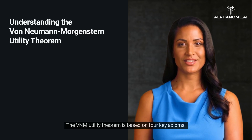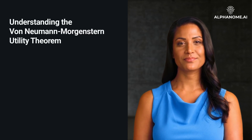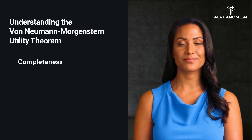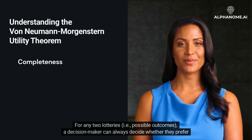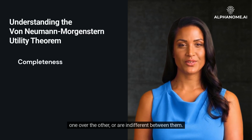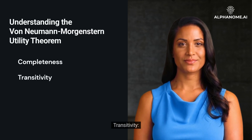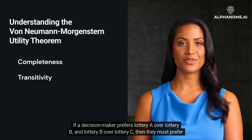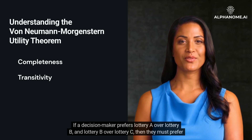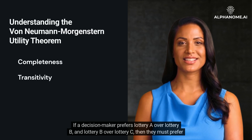The VNM Utility Theorem is based on four key axioms. Completeness: for any two lotteries — i.e., possible outcomes — a decision-maker can always decide whether they prefer one over the other, or are indifferent between them. Transitivity: if a decision-maker prefers lottery A over lottery B, and lottery B over lottery C, then they must prefer lottery A over lottery C.